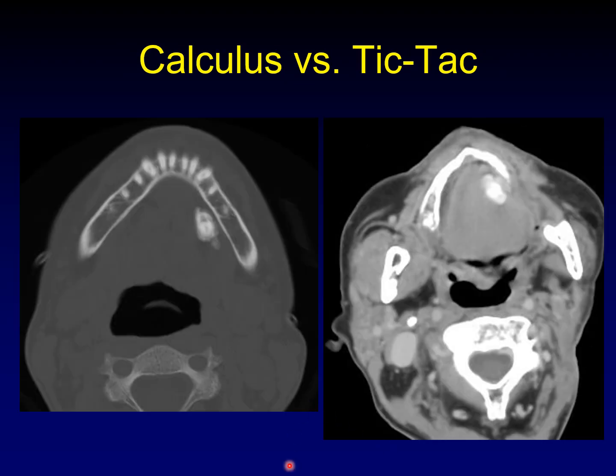One of these is a stone in Wharton's duct, and the other is the common candy a tic tac. The tic tac doesn't look much like a tic tac because of motion — the patient's tongue is moving the tic tac, and that motion makes it look a lot like the calculus. This is the calculus. That's a tic tac with motion. You can see how this might be confusing.